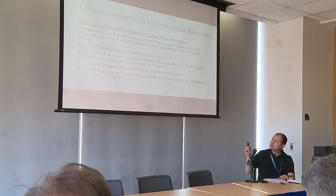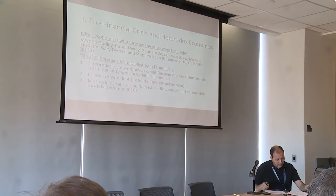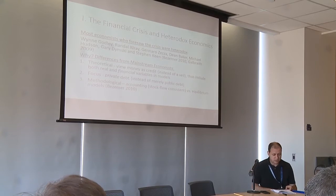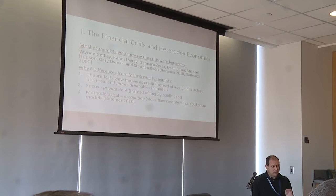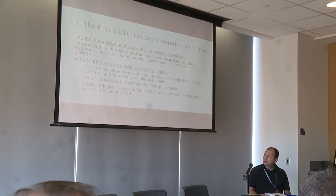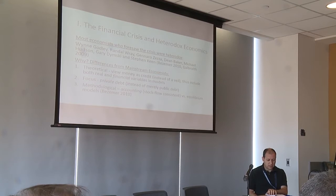How come most of the people who predicted the financial crisis were heterodox? Looking at the lists in papers by Besomir (2010) and James Galbraith (2009): theoretically, they viewed money as credit rather than a neutral veil. Their data focus was on private debt instead of public debt. And they used methodologies which were accounting models — including SFC — to look at how stocks and flows balance. The mainstream view is essentially the Walrasian loanable funds model where money is exogenous and neutral; the endogenous money view holds that banks create money by making loans.